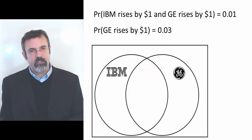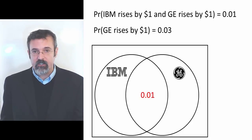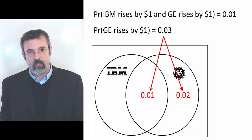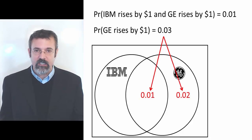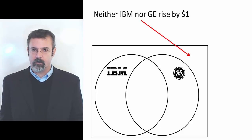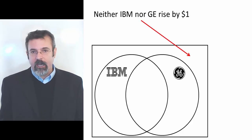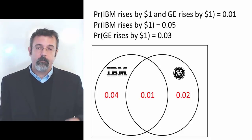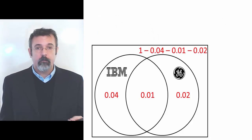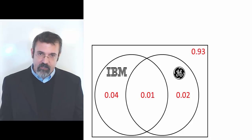Recall also that the probability of GE stock rising by $1 is 3%. We already have 1% sitting in the GE circle, which means that the portion of the GE circle on the right must be 2%. The 1% in the center plus the 2% on the right gives us a total of 3% in the GE circle — the probability of GE stock rising by at least $1. The area outside the two circles is the probability of neither IBM nor GE rising by $1. On a Venn diagram, all the probabilities have to add to 1, so this area outside the two circles must be 1 minus 4%, minus 1%, minus 2%, or 93%.